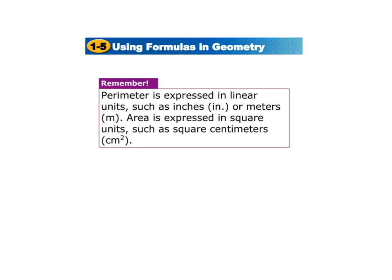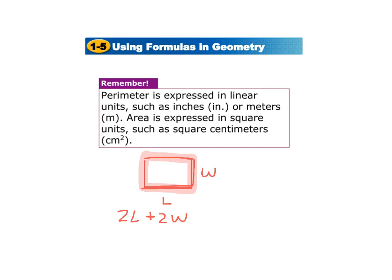The perimeter is expressed in linear units, such as inches or meters, and the area is expressed in square units, such as square centimeters. For the perimeter of a rectangle we add up all the sides — 2L plus 2W — which gives us just inches, since we're walking along continuous inches. For area we multiply, so it's expressed as inches, a continuous measurement.